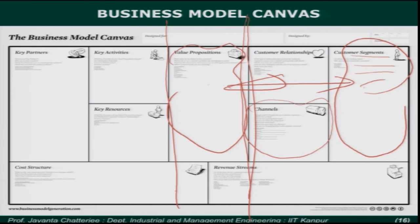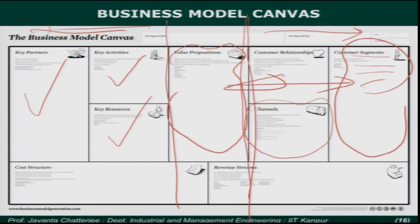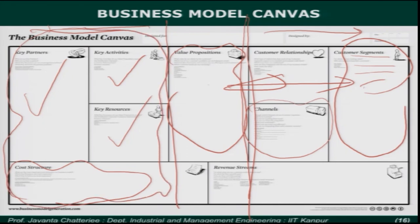The value proposition is in the center. This is the customer-facing side and this is the internal operations-facing side. You have to think about what activities you need to perform inside the organization to make this new product happen, what key resources you need, what key partners you must have — whether as an outsourcing partner, a supply chain partner, or a co-developer — and what your cost structure will be.